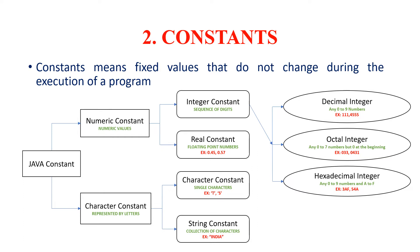Decimal integers have numbers from 0 to 9 — for example 111, 555, etc. Octal integers have numbers from 0 to 7 and the starting number must always be 0 — for example 033, 0431, etc. Hexadecimal integers have numbers from 0 to 9 and also a to f — for example 3af, 54a, etc. Real constants are nothing but floating point numbers, for example 0.45, 0.57, etc.